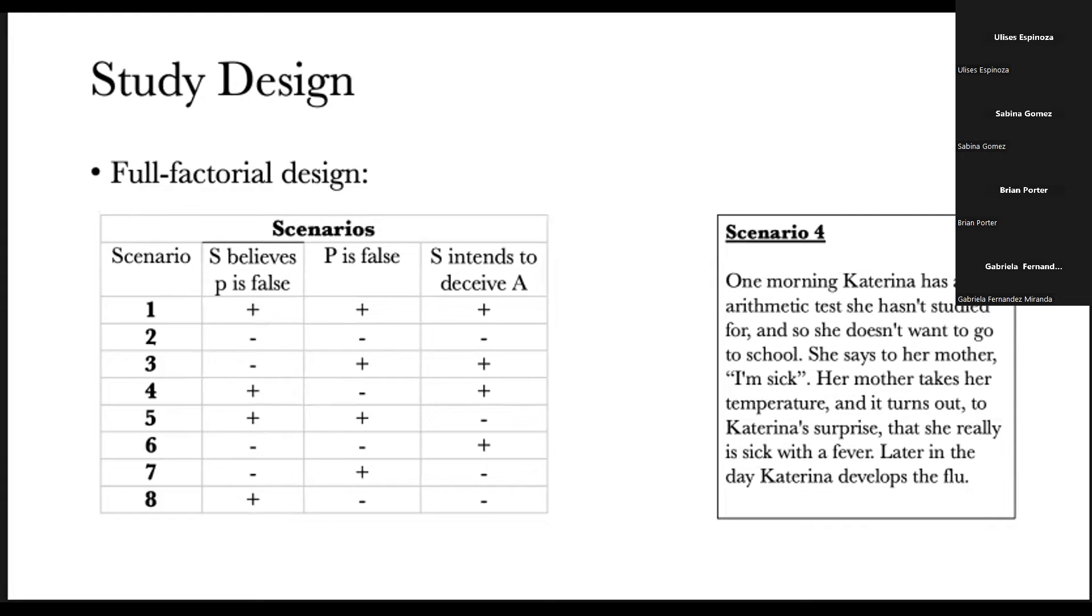As an example, here's one of the vignettes that we used: One morning, Katrina has an arithmetic test she hasn't studied for, and so she doesn't want to go to school. She says to her mother, "I'm sick." Her mother takes her temperature and it turns out, to Katrina's surprise, that she really is sick with a fever. Later in the day, Katrina develops the flu. As you can see, the speaker here thinks that what she's saying is false. Actually, it's not false, it turns out not to be false. And the intention is to deceive; the intention of Katrina is to deceive her mother.